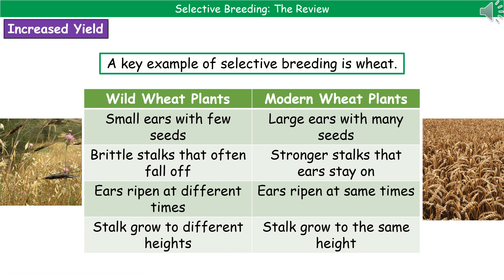One of the key aspects of selective breeding, as we said earlier, is to increase the yield, and one of the key examples is wheat production. Comparing wild wheat plants to modern selectively bred wheat plants: the wild wheat plant has very small ears with only very few seeds, brittle stalks where ears often fall off, ears that ripen at different times, and stalks that grow to different heights — none of which is ideal for harvesting large yields. Whereas the modern wheat plant has larger ears with many seeds, stronger stalks so the ears stay on, all ripen at the same time, and all stalks grow to the same height, meaning that when we use machinery to harvest, we get all of those seeds.